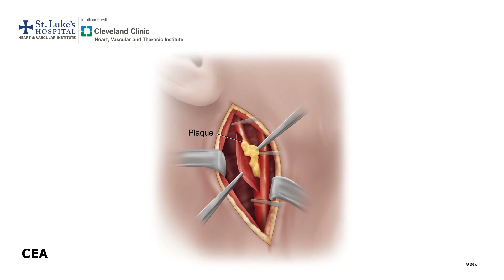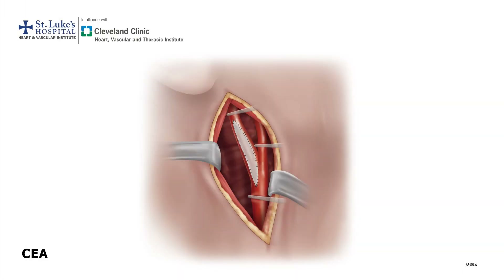Once the carotid artery is dissected out from the surrounding tissue, the patients are given a large dose of blood thinners and vascular clamps are placed on the arteries. The artery is then opened and the plaque, or blockage, is gently teased out from the artery. After removing the plaque, the artery is flushed and repaired by sewing a patch onto the surface of the artery to prevent any further narrowing.